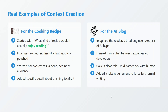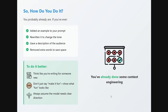The basic framework: add an example to your prompt, rewrite it to change the tone, give a description of the audience, and remove extra words to save space. To improvise: think like you are writing for someone. Don't just say 'make it fun' — show what fun looks like by giving an example. Always assume the model needs clear direction; don't assume it knows anything. Whatever you tell it becomes its knowledge. Try out a new example with ChatGPT, see the difference, and let me know in the comments how you feel about it.